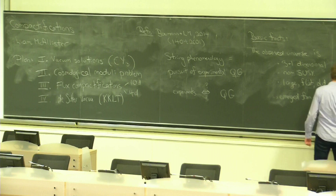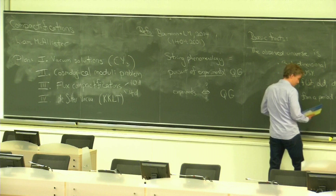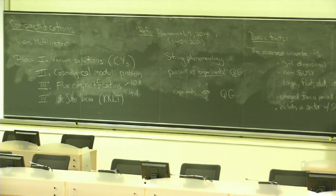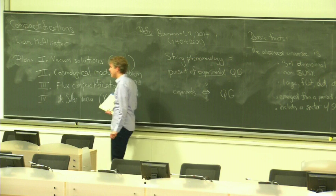In addition to being 3 plus 1 dimensional and non-supersymmetric, it's large, flat, old, and it's dominated by dark energy. And it emerged from a period of inflation or something very similar to inflation. At very early times. And finally, it includes a sector with the standard model gauge group and chiral fermions. And that's just about enough.